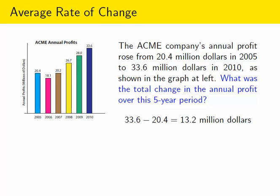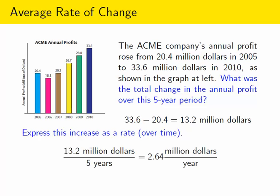But a lot of times what we're interested in is not just the total change, but the rate at which that change occurred. Like on average, how much did it change each year? So what we could do here is take the total change and divide it by the amount of time that elapsed. If we express this as a rate, we would take the $13.2 million divided by the five years that passed, giving us a rate of $2.64 million per year.